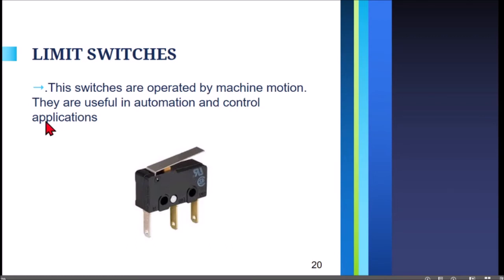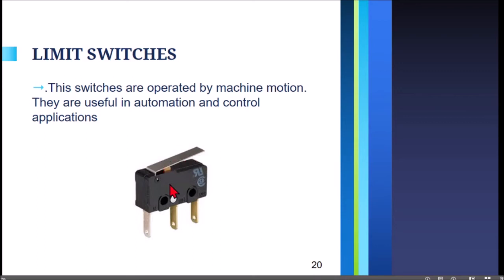Limit switches are operated by machine motion, making them useful in automation and control applications. When a part of the switch is pressed — perhaps by a reaction of a machine or a certain weight — it will turn on or turn off the motor controller, depending on whether the switch is normally open or normally closed.